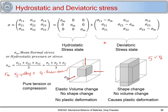If you look at the deviatoric stress state carefully, you have shear stresses as well as normal stresses. The presence of shear stresses will cause plastic deformation or shape change. In the hydrostatic case, you don't have any shear stresses, which is why there is no shape change — the normal stresses, which are all equal to sigma m, cause only a volume change rather than any deformation.